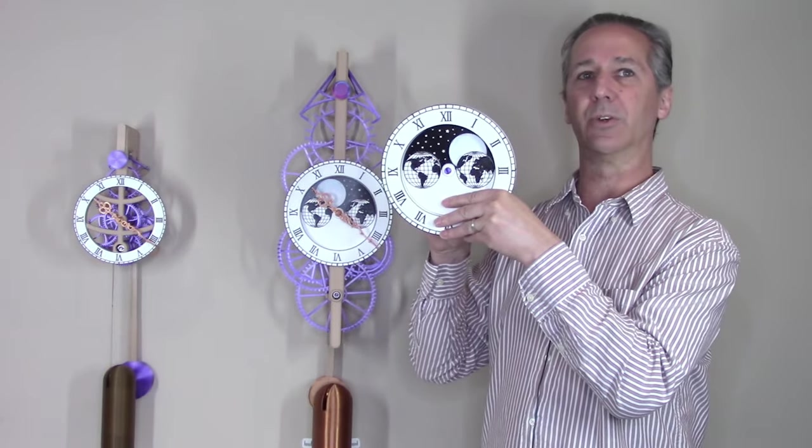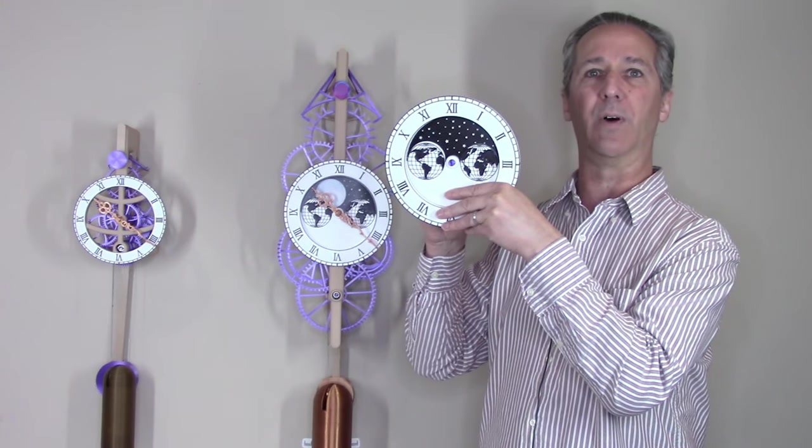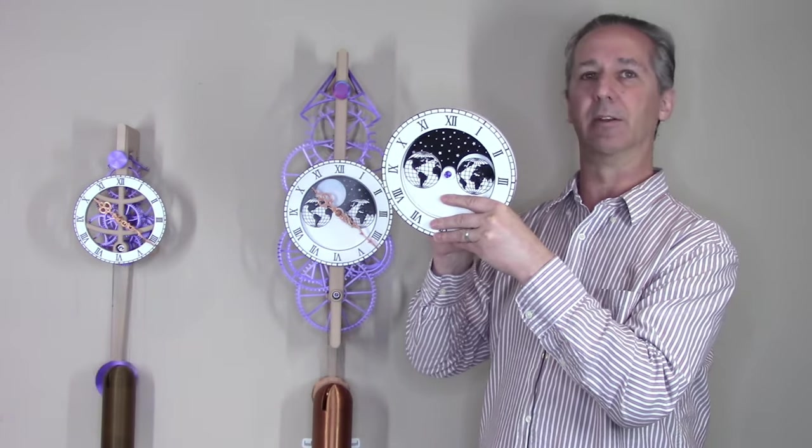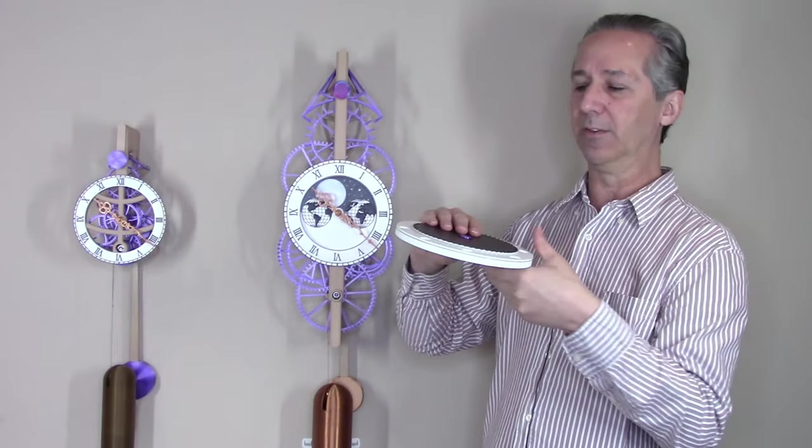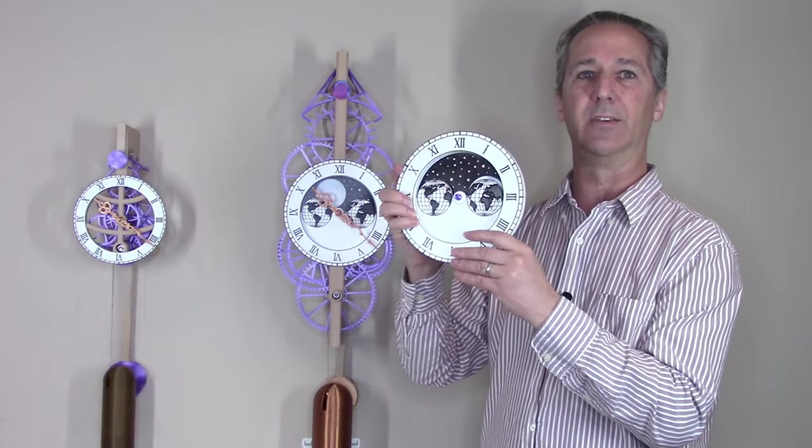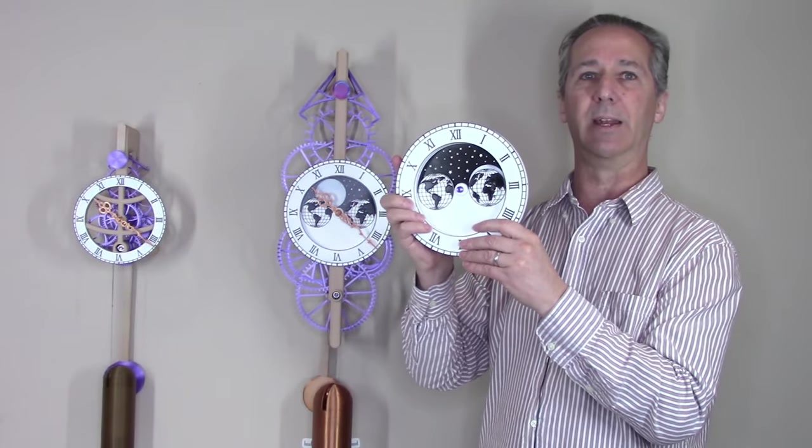The actual time between full moons is 29.53 days. But to get the gearing to be done with a reasonable number of teeth on the gears, that 29.53 days is rounded down to 29 and a half.